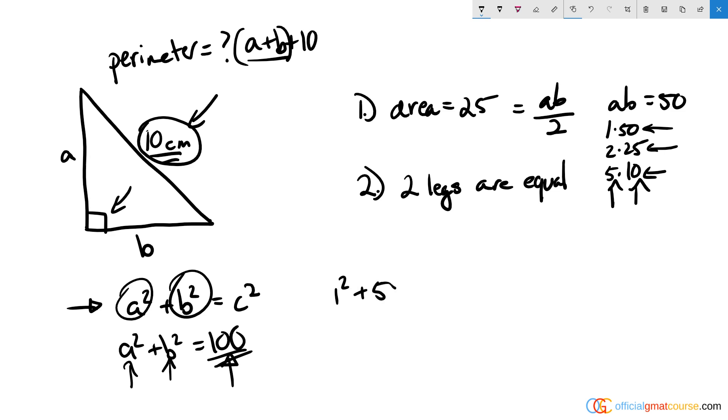So let's see what happens if I plug one in for a: I get 1² + 50². Is that going to equal the same thing as if I took the 5 and 10 example, 5² + 10²?